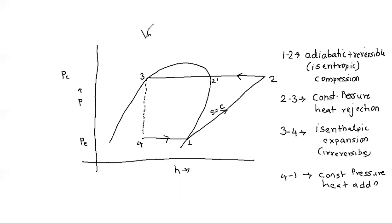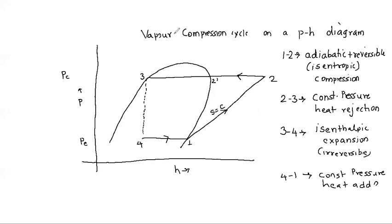The cycle drawn on the pressure-enthalpy diagram is called the vapor compression refrigeration cycle. This pressure-enthalpy (p-H) chart is available for different refrigerants and is a very useful tool for analyzing practical systems. To analyze this cycle, I need to apply the steady flow energy equation across each component.